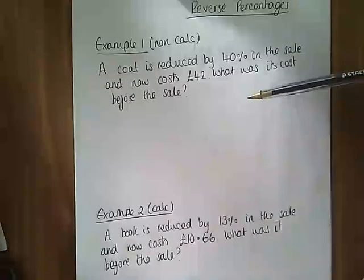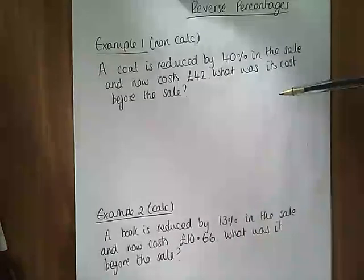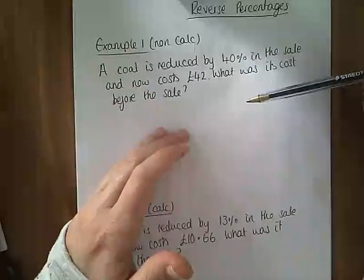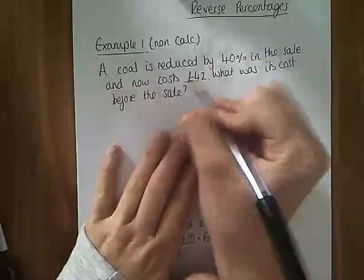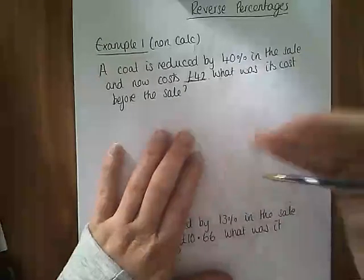Okay, so here's an example. A cake was reduced by 40% in sale and now costs £42. What was its cost before the sale? So what this is saying is we had an amount, we found 40% of it and we took it away and our answer is £42. And we've got to work backwards to work out what it was before we started.